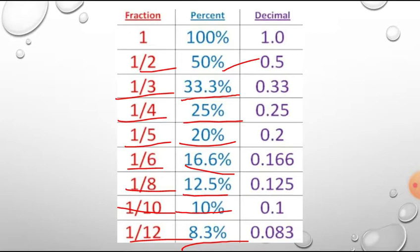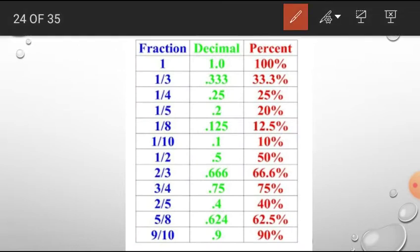If you remember this table, all the values in this table, then you can solve any problem in percentages easily within seconds. And in this table, I have included some extra digits like 2/3 and 3/4, 2/5 and 5/8 and 9 by 10. And see here, 66.6 percent means 2 by 3, and 75 percent means 3 by 4, and 62.5 percent means 5 by 8.